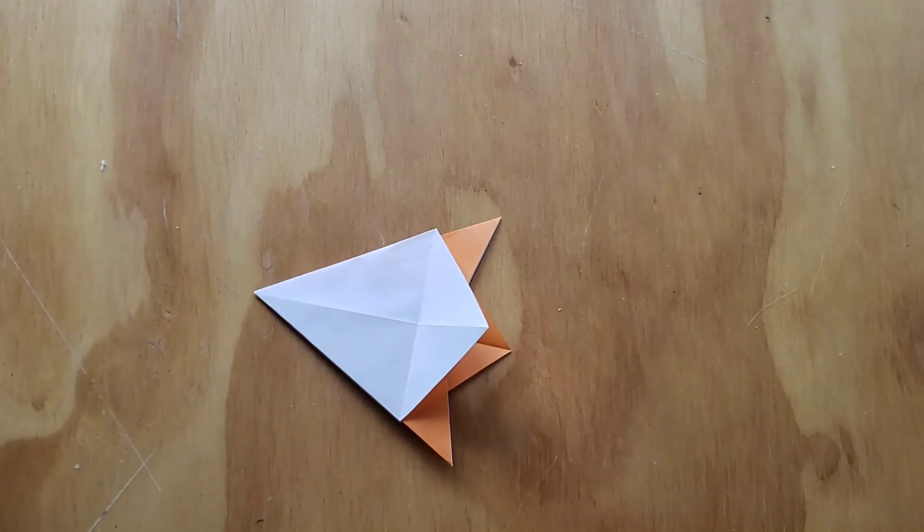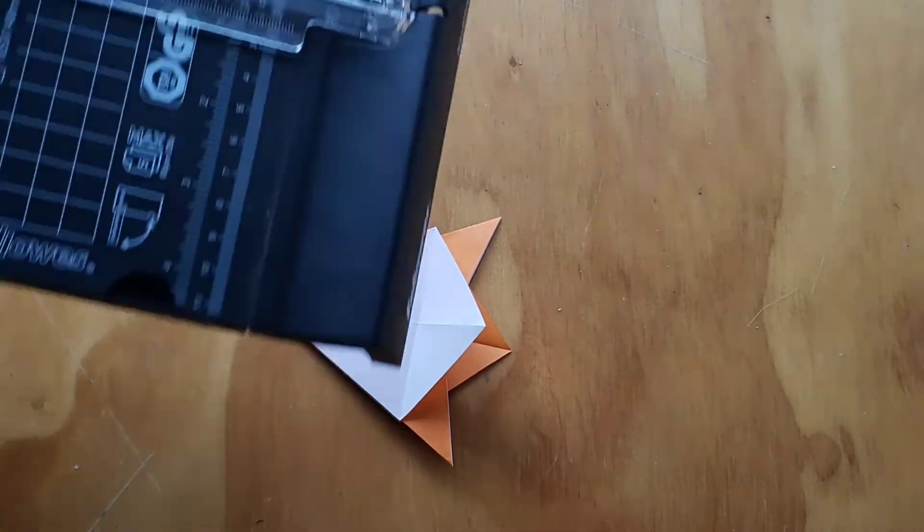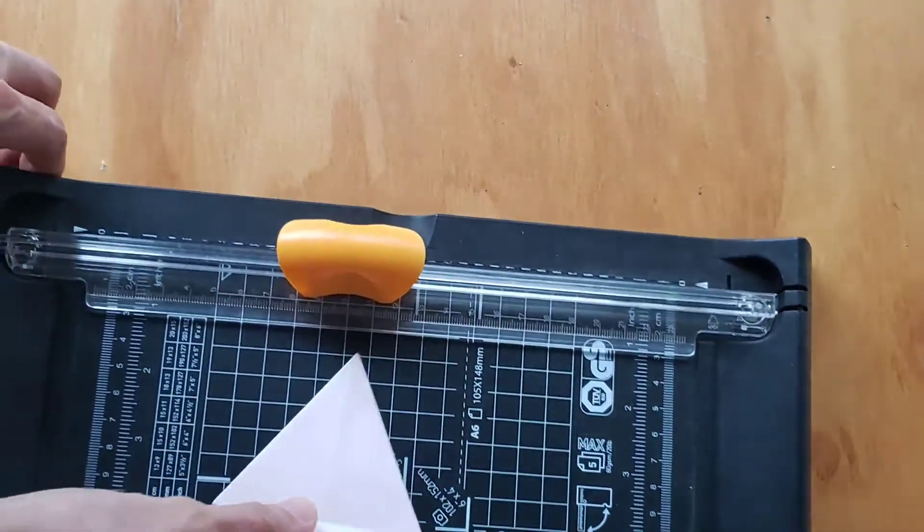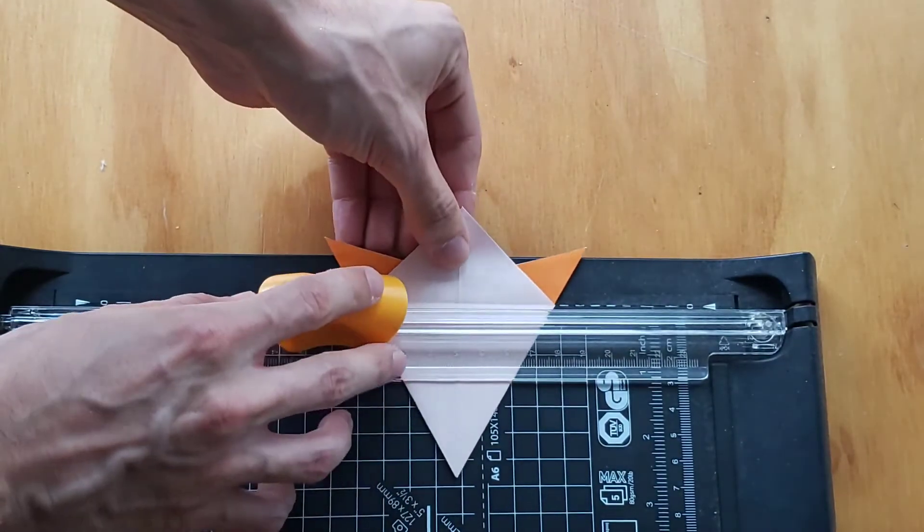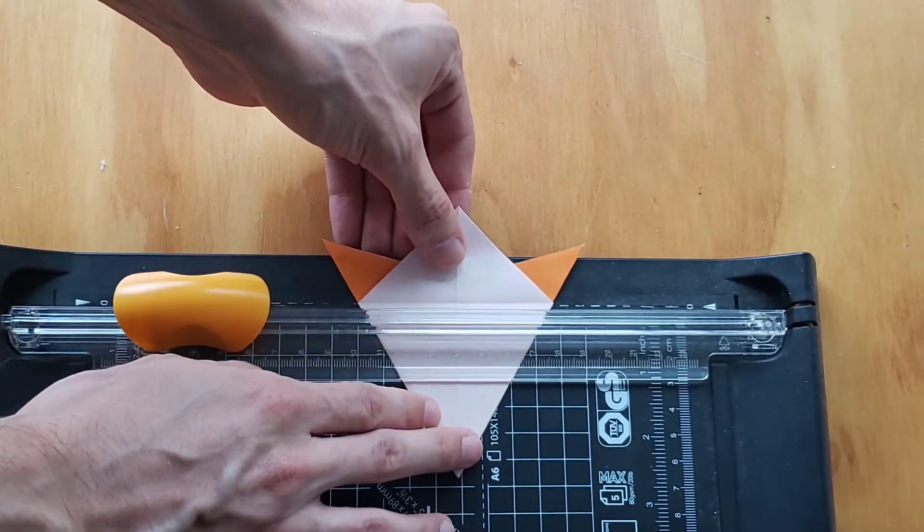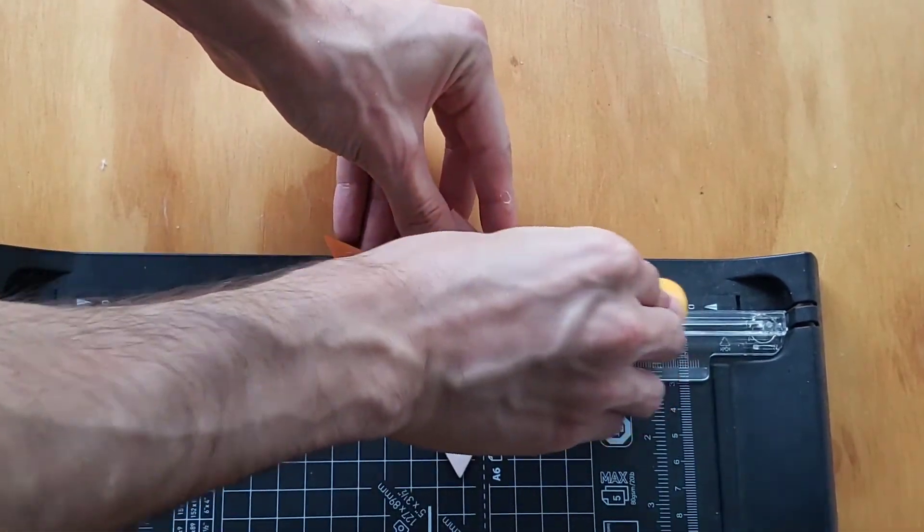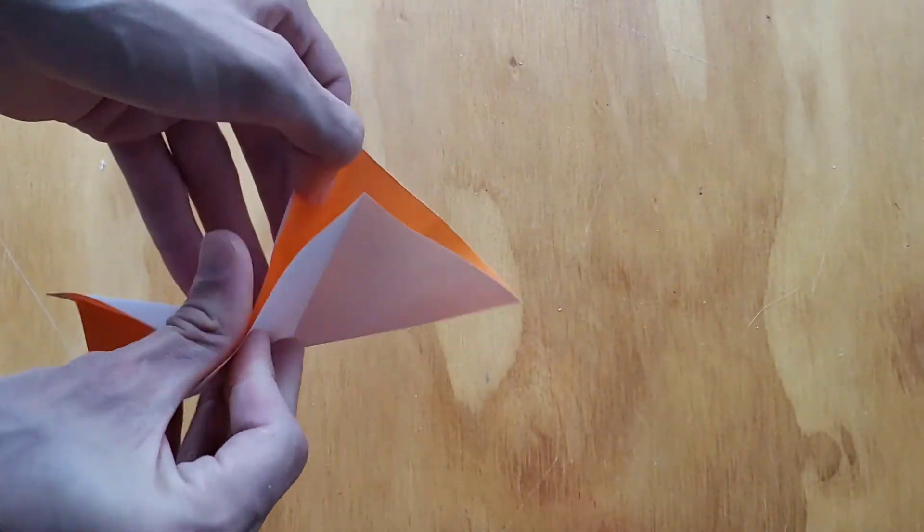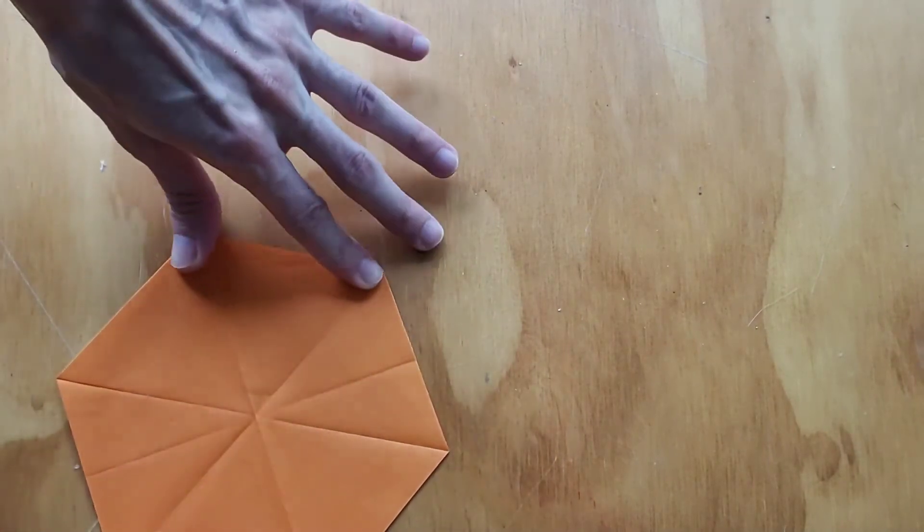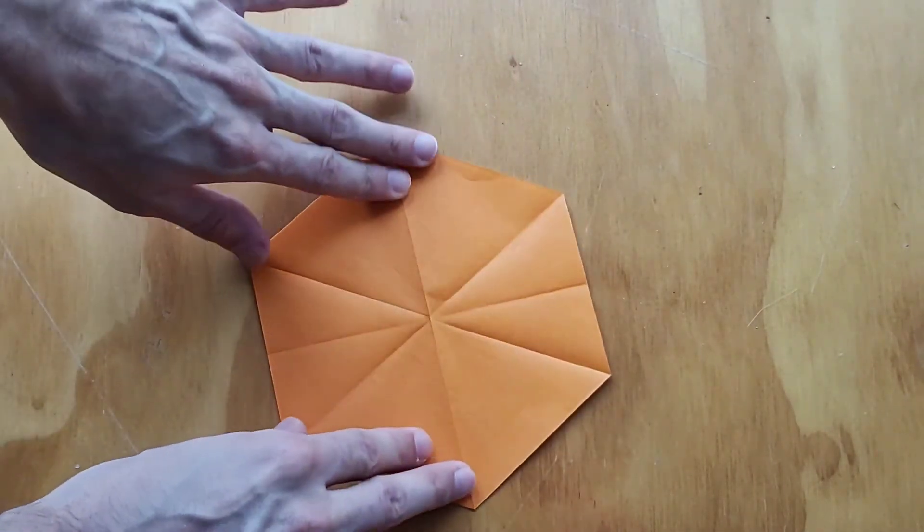But let's just cut it. I have a cutting thing here. So this is nice to get a nice straight line. And there you go. Hexagon.